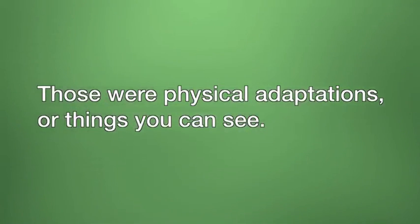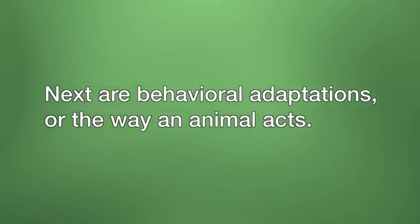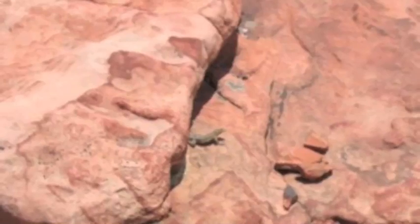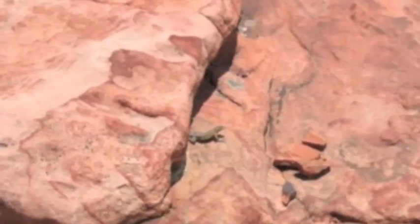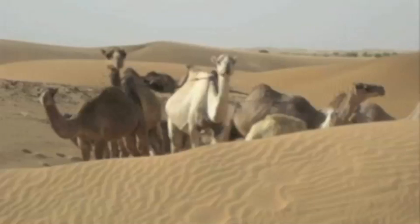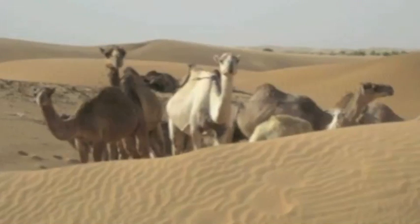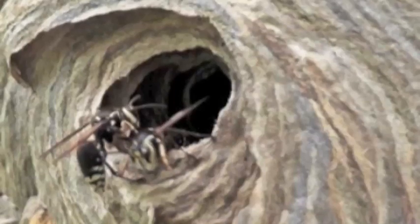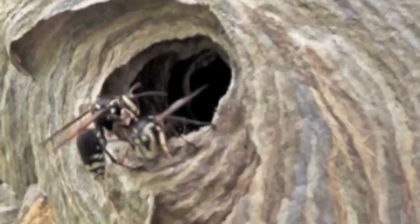Those changes or adaptations we just talked about were physical adaptations, or things you can see. The next are behavioral adaptations, or changes in the way an animal acts. Many animals will make shelters for protection from predators and weather. Animals will hide in shady, cool spots during the day to avoid overheating. Paper wasps make nests out of small pieces of plants and paper.